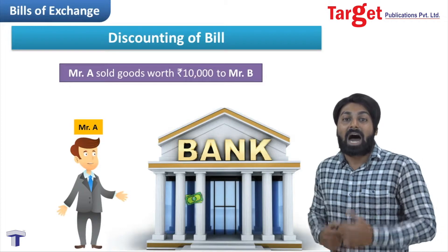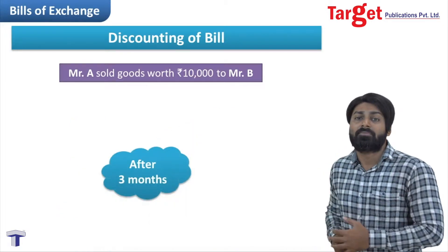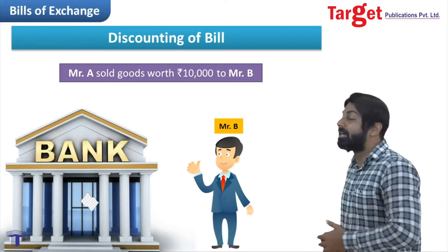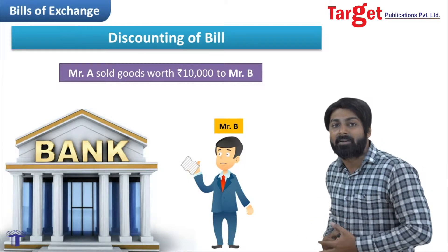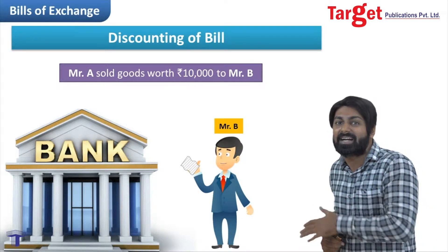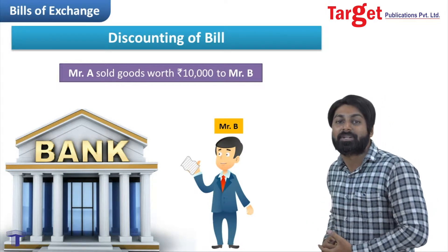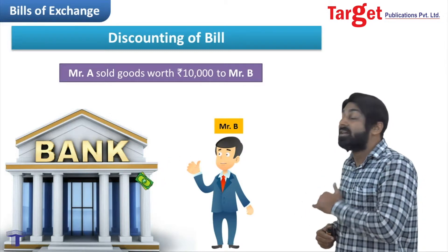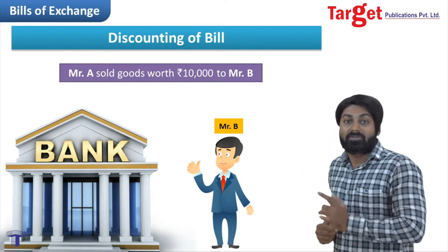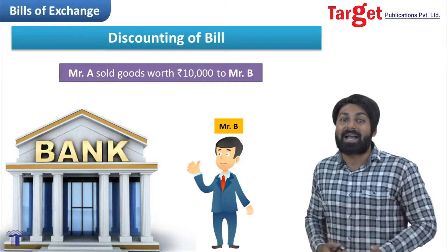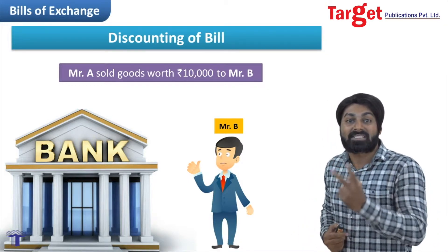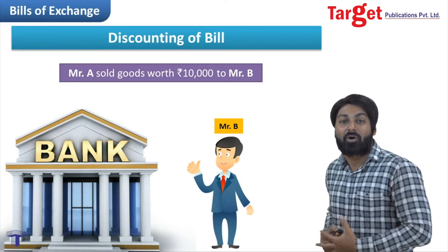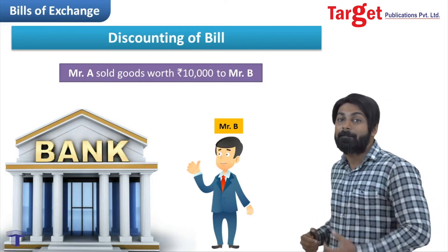After three months, the bill is with the bank. The bank will go to the drawee, give that bill to the drawee, and the drawee in return will make the payment. Will the drawee pay 9,800? No — the drawee will make the entire payment of 10,000. So the bank's profit is 200 rupees, because the bank only paid 9,800 but received 10,000.